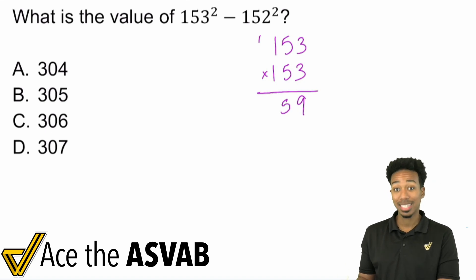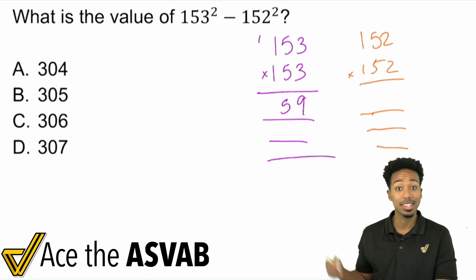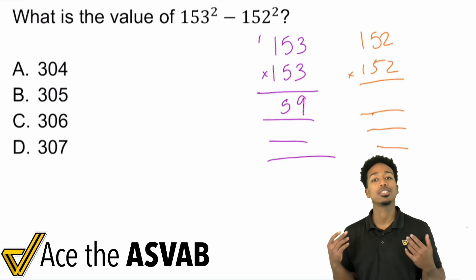But here's the thing. This is going to take forever. It's going to take one, two, three lines, then doing the 152 squared. That's going to be all of that. And you're going to take all the time in the world to get this done. Then you're going to subtract them. And the thing is, you don't need to do that.